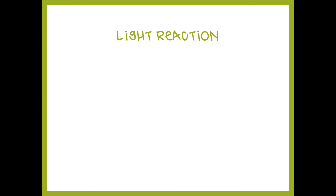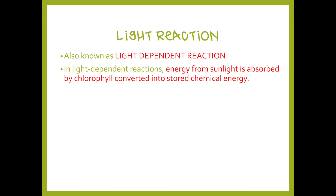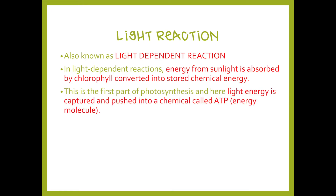The first part of photosynthesis is the light reaction, also called the light-dependent reaction because it requires light — without light this reaction will not take place. In this reaction, energy from the Sun is taken in by chlorophyll and converted into stored chemical energy called ATP, which is our energy molecule. This reaction takes place in the thylakoid.